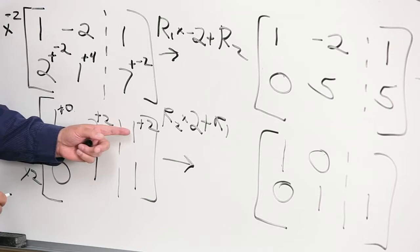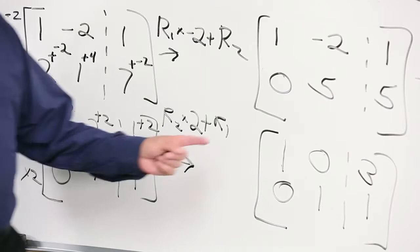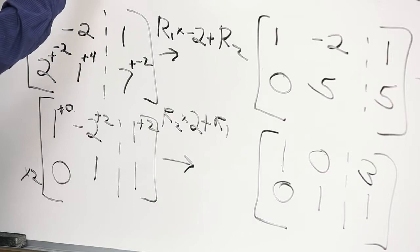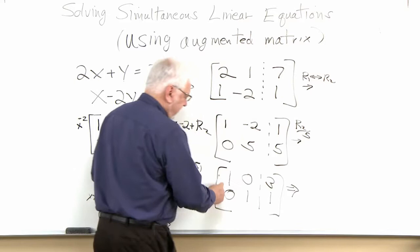We accomplished our goal — the matrix is row-reduced: 1, 0, 3 on top and 0, 1, 1 on the bottom. Now we just translate it back into regular language. This says 1x equals 3, so x equals 3, and 1y equals 1, so y equals 1. Same answer we had before.